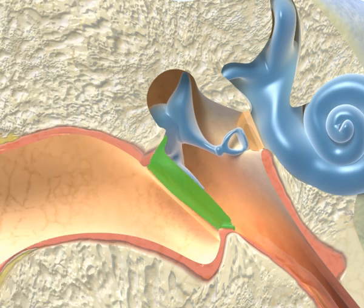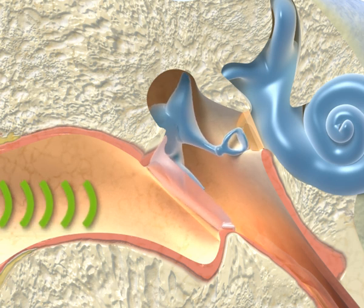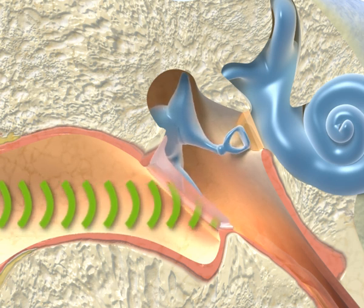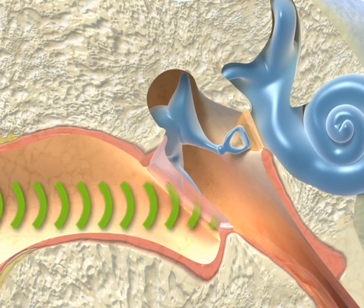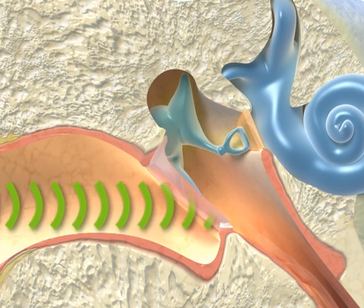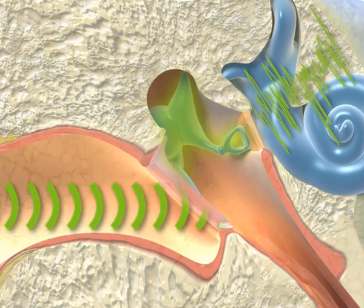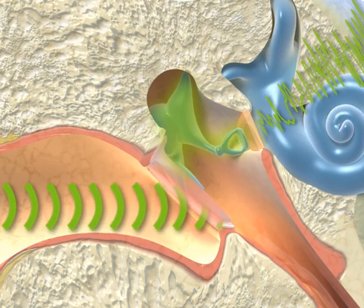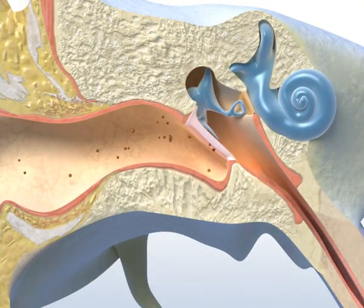The stretched eardrum separates the outer auditory canal from the middle ear and has an important role in the process of hearing. Sound waves from the outside environment set it into vibration. The eardrum transfers these vibrations to the bones of the ear. These bones are arranged as a readily movable lever, which then amplifies the vibrations and carries them on to the inner ear. The eardrum also prevents dirt and germs from entering the middle ear.